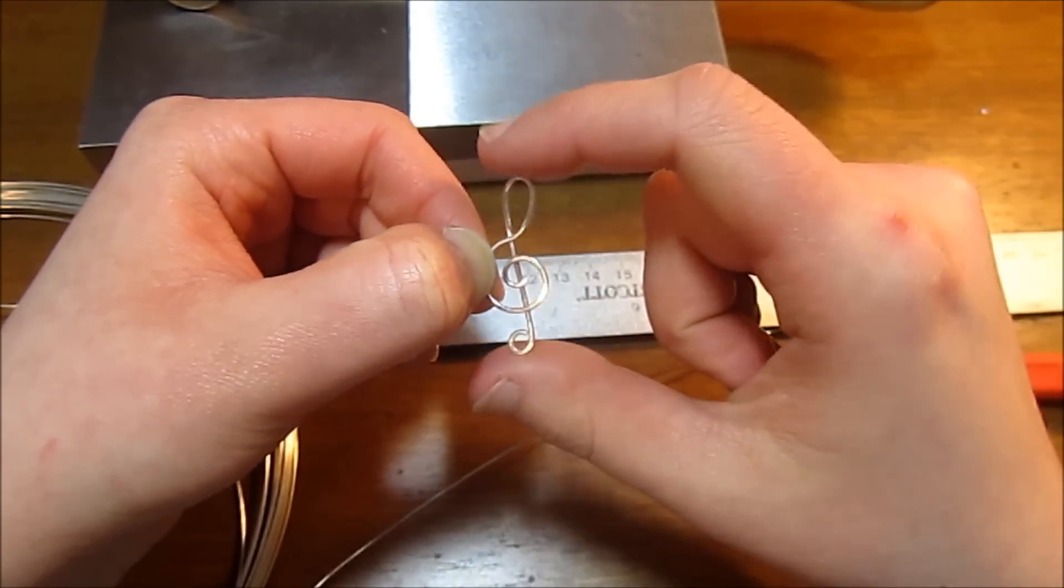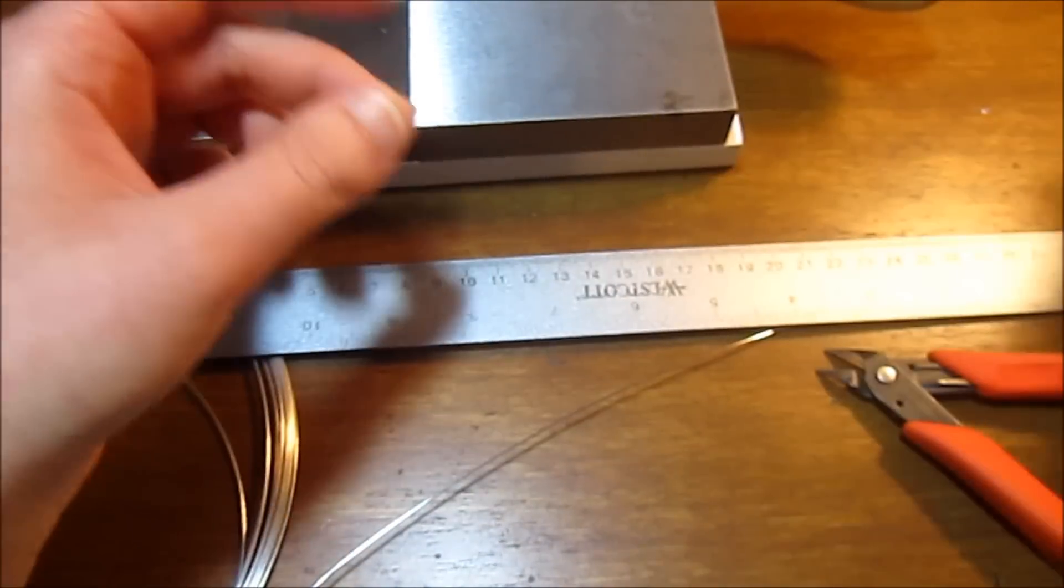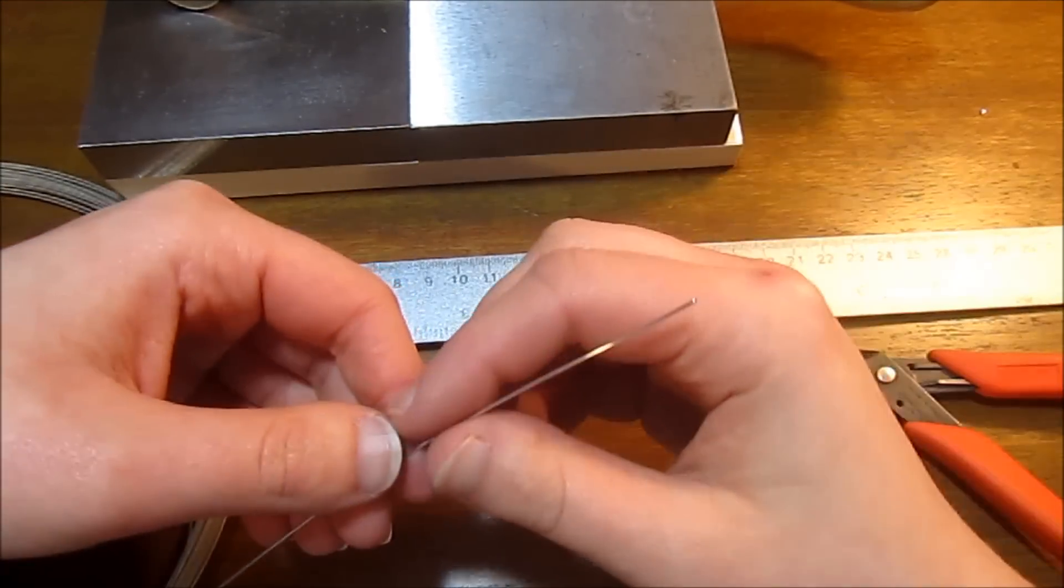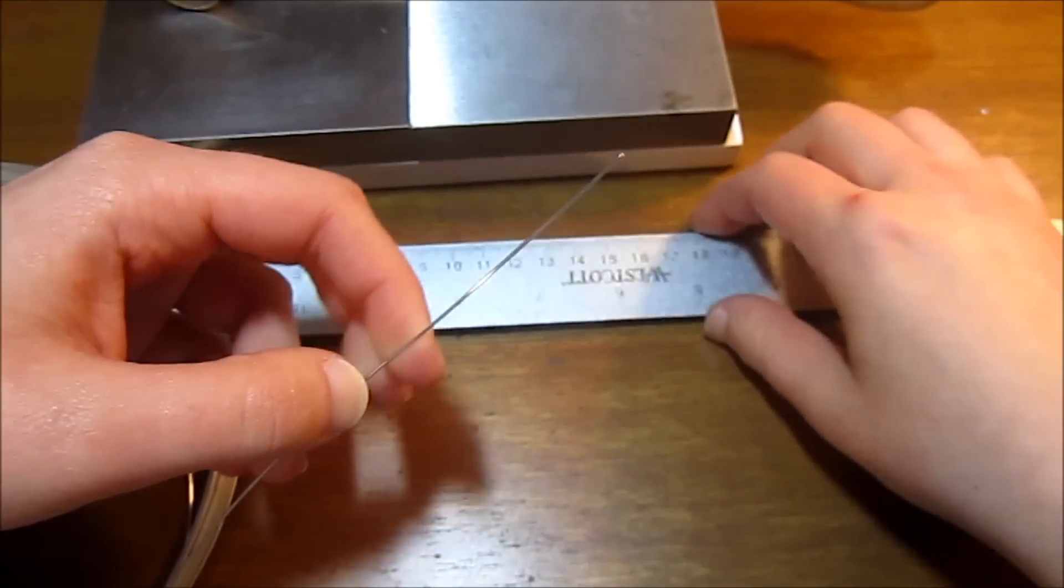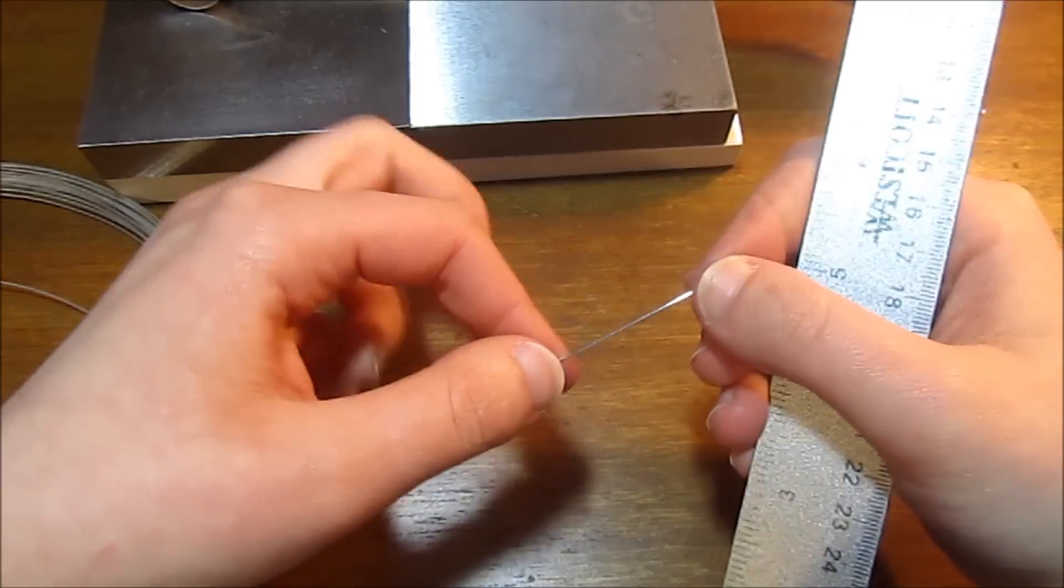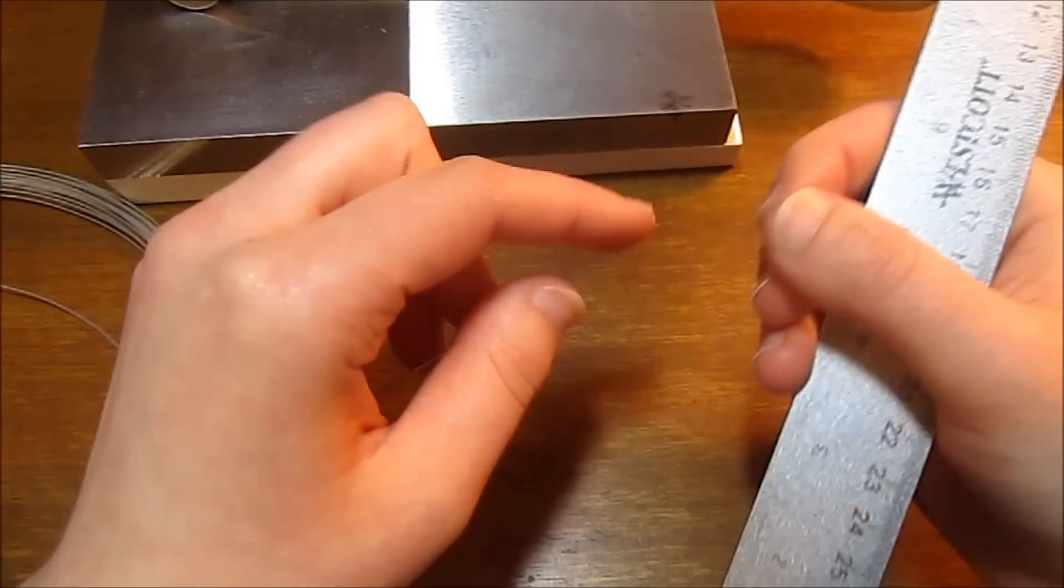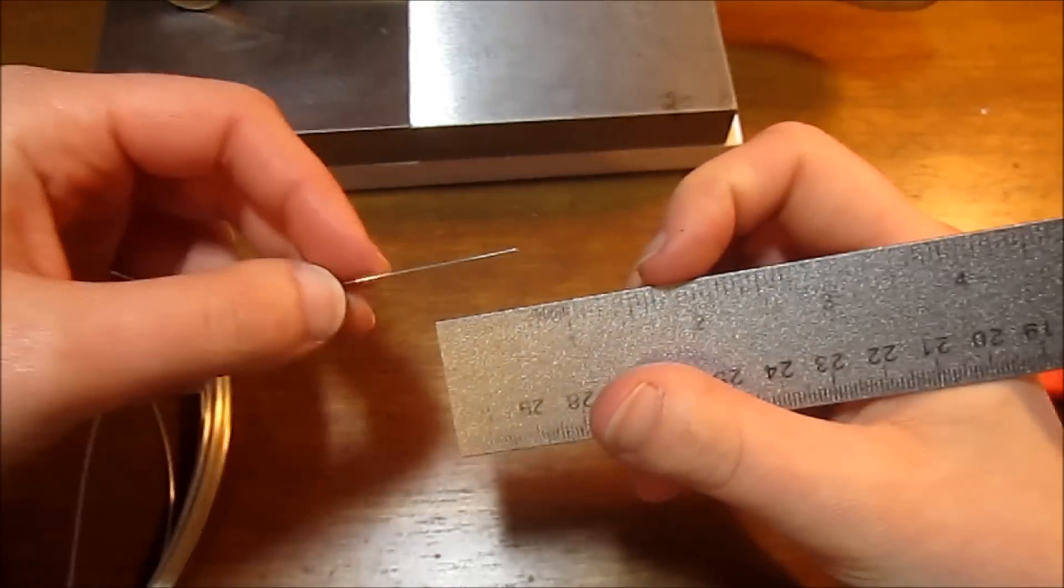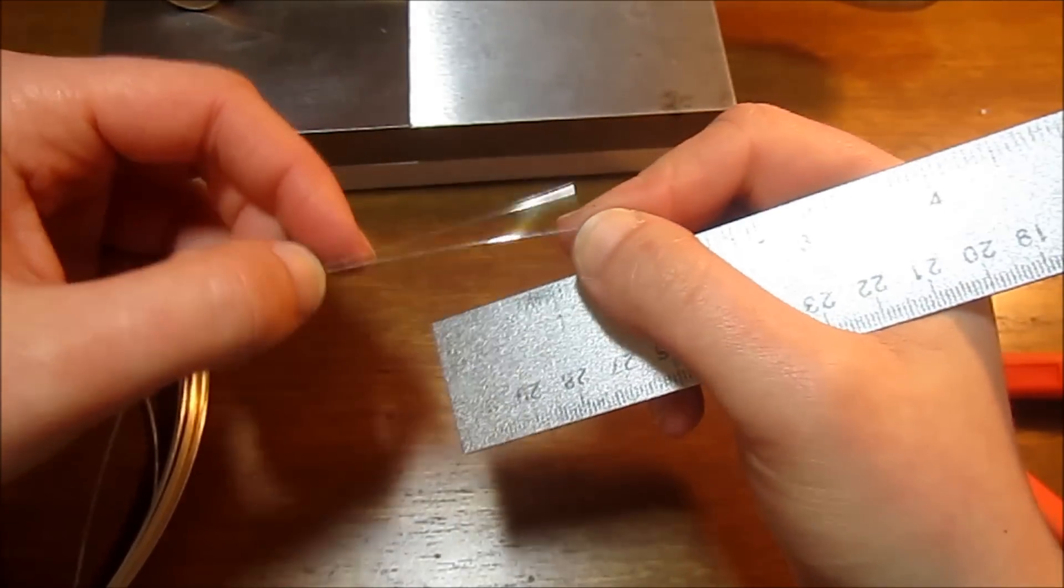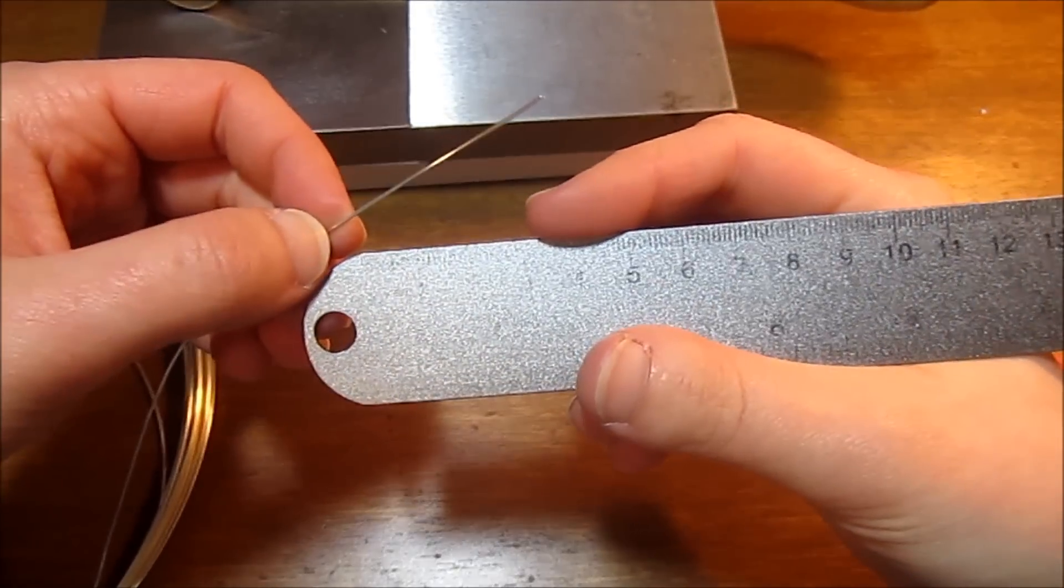Let's get started with our wire. This is 20 gauge round dead soft wire. I'm using silver filled, but you can use whatever you like - silver plated, copper, brass, or sterling. We're going to start off with our centimeter side.